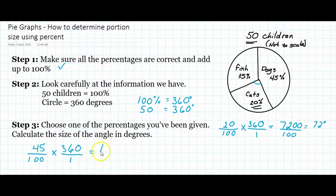That's 16,200 over 100, and again we take this number and divide it by the denominator, so that gives us 162 degrees.